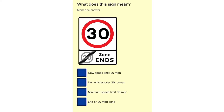What does this sign mean? New speed limit 20 miles per hour. No vehicles over 30 tons. Minimum speed limit 30 miles per hour. End of 20 miles per hour zone.